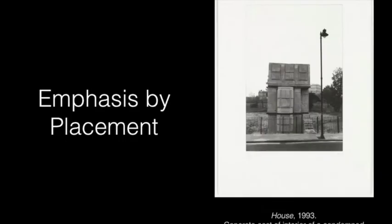Emphasis by placement. This is a piece called House by Rachel Whiteread, made in 1993. This is a concrete cast of the interior of a condemned house in London, from a low-income tenement area. Rachel Whiteread found this house in an area going through gentrification — being turned over into a higher-income area. She came into this house that was going to be torn down, sprayed concrete on the inside of it, and then removed the outer shell. What was left was a cast of the interior of the apartment. The placement of it in the neighborhood where it really lived is so important.